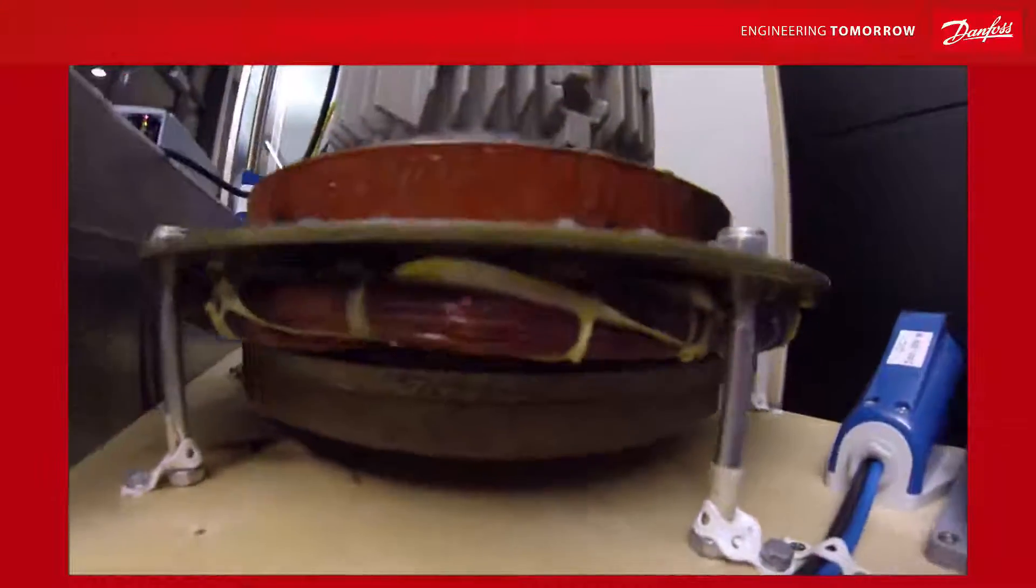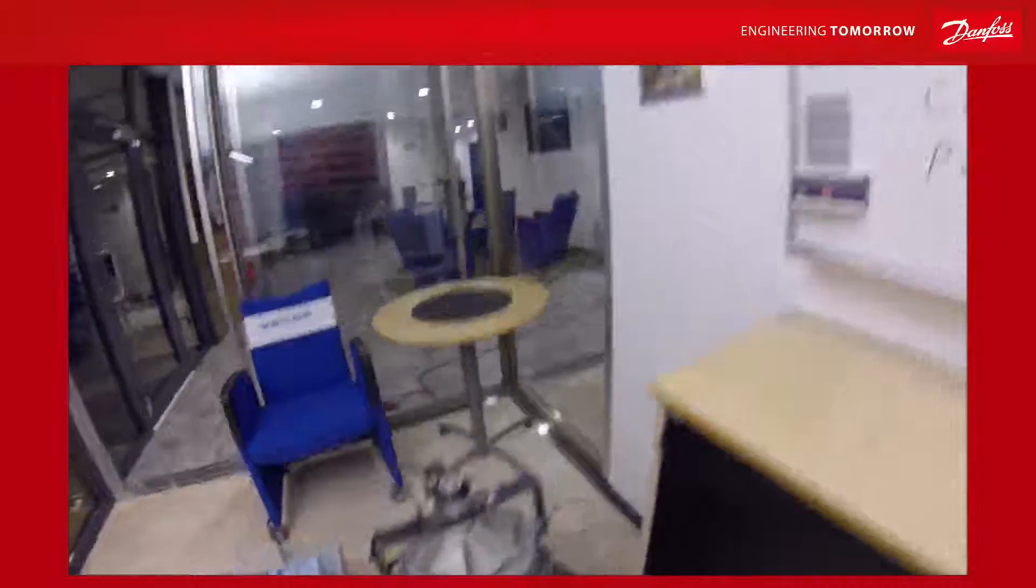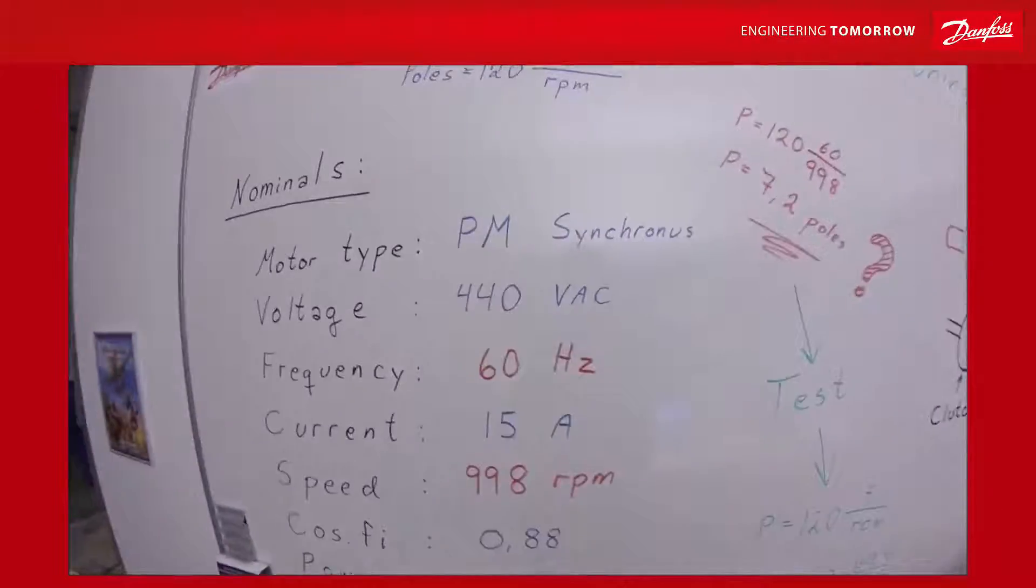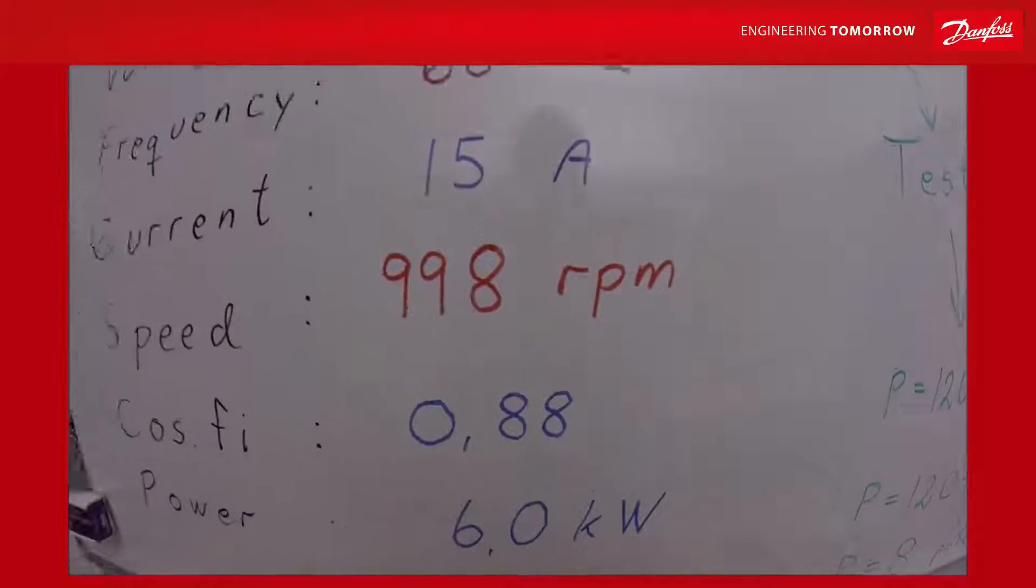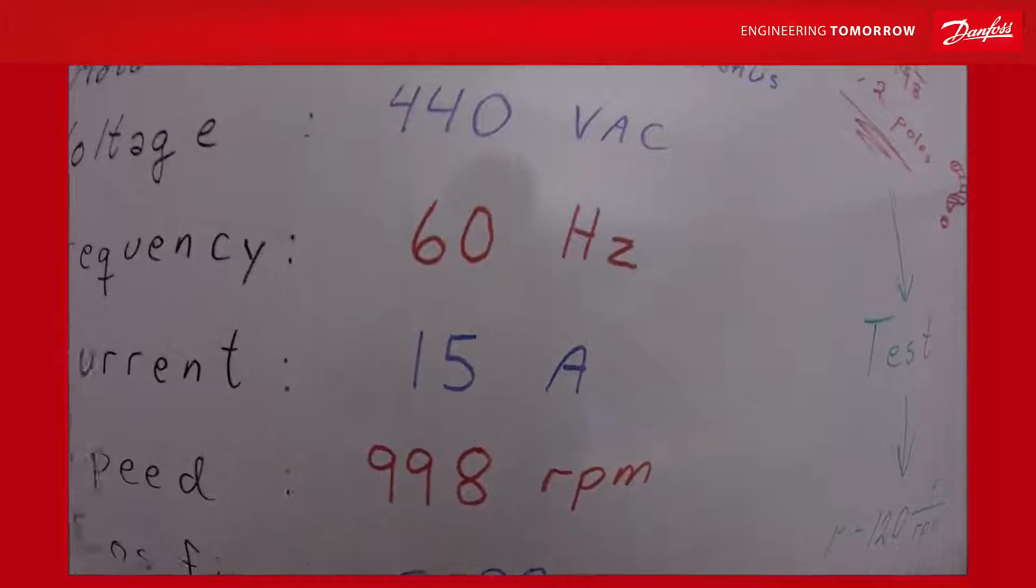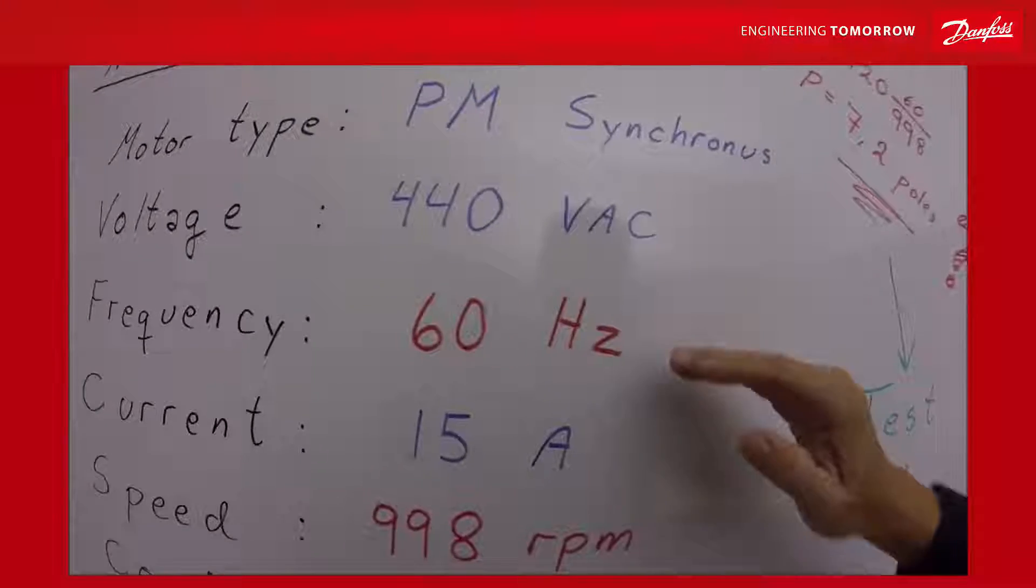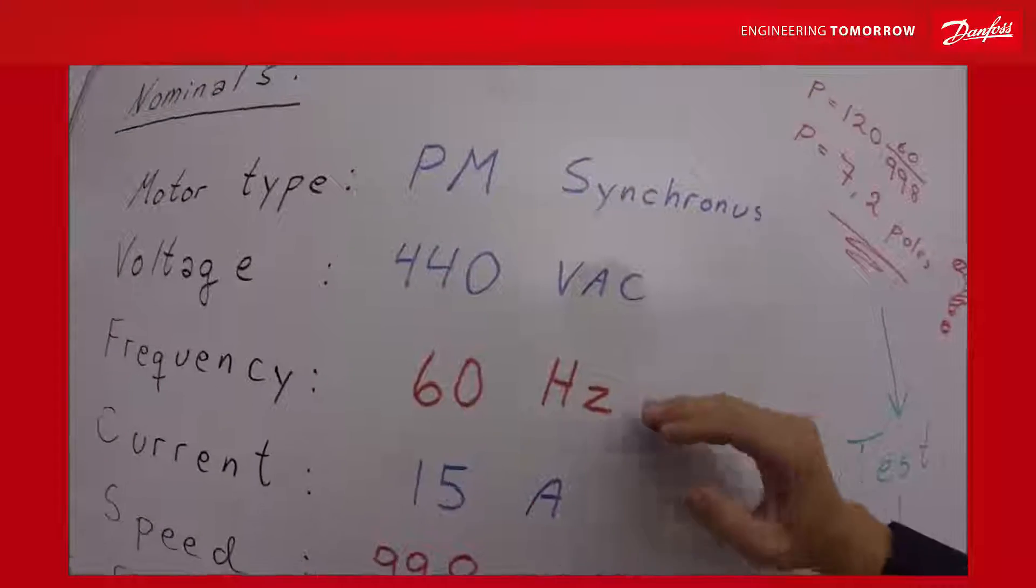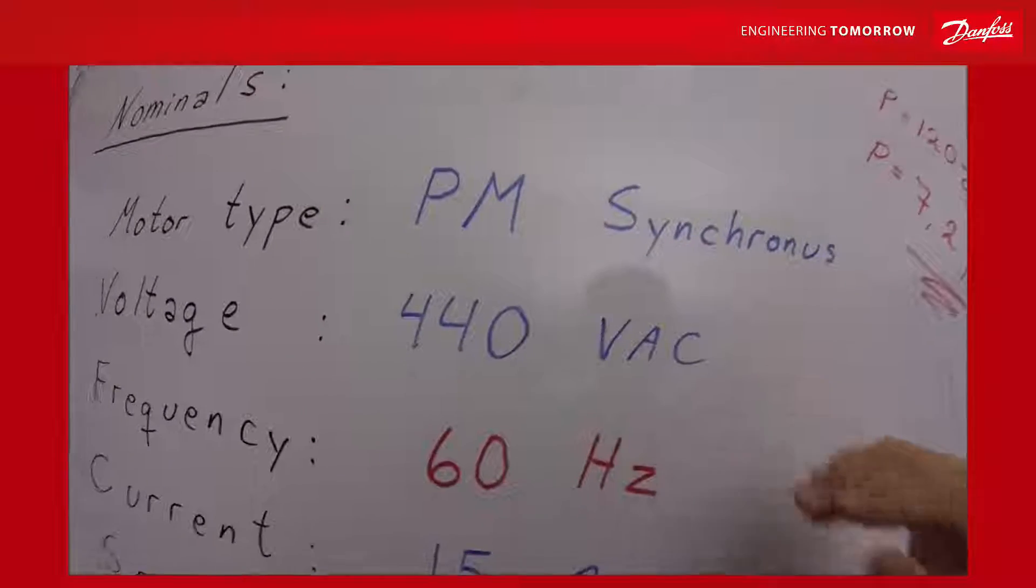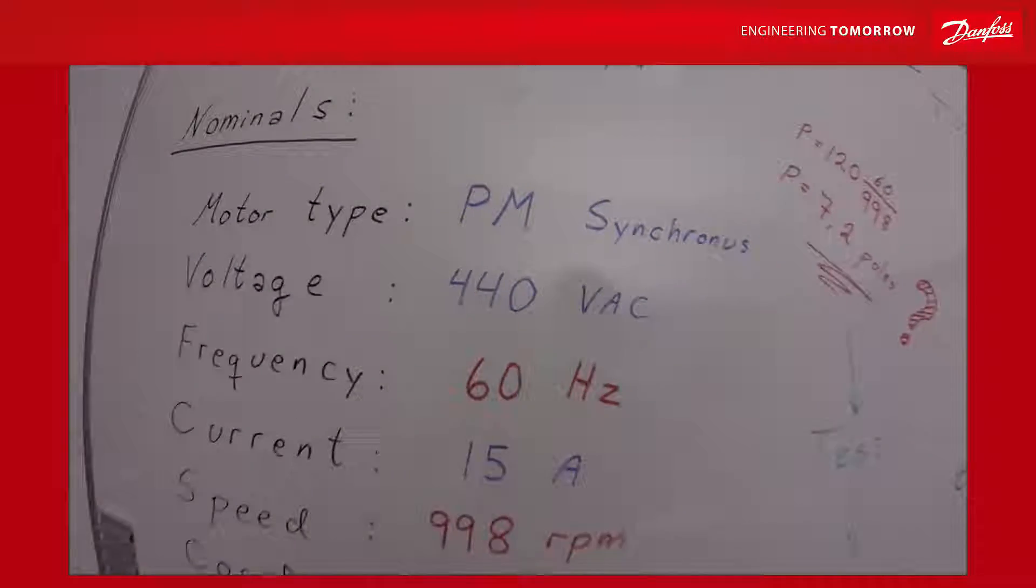To achieve correct tuning we need to know the motor nominal data. The motor vendor has given me this data. Are they right? Are they precise enough? Especially the relation between the frequency and RPM is important and also the relation between the frequency and the voltage which is the back EMF curve. Let's check.